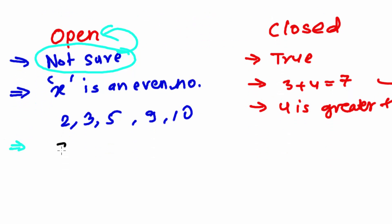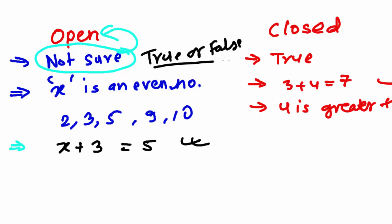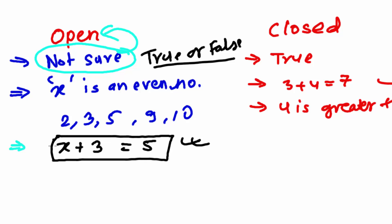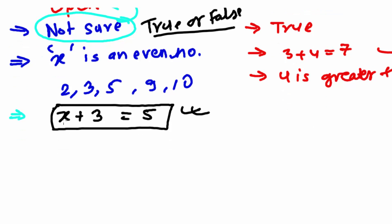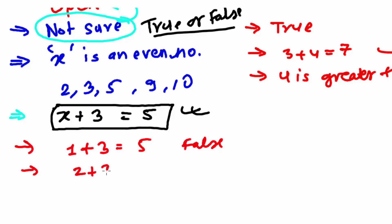For example, 'x plus three equals five.' How do I say this is true or false? I'm not sure — it can be true or it can be false. You can understand this simply by putting in various numbers. If I put one: one plus three equals five — that's false. If I put two: two plus three equals five — that's true.